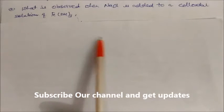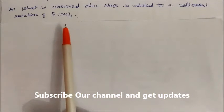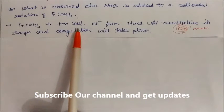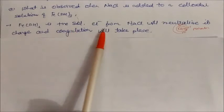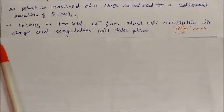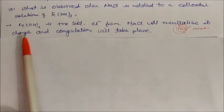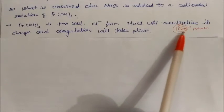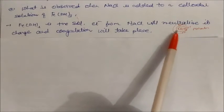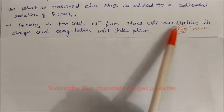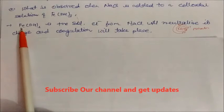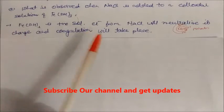What is observed when sodium chloride is added to a colloidal solution of iron hydroxide? Iron hydroxide is a positive sol, so chlorine ion from NaCl will neutralize its charge and coagulation will take place. This is called peptization, where Cl neutralizes the Fe³⁺ charge, and this is called coagulation.